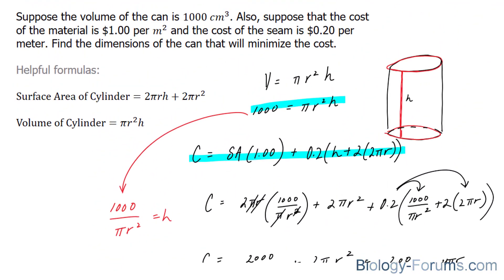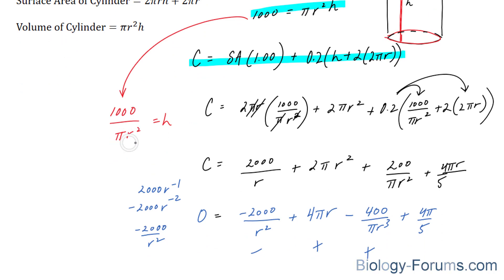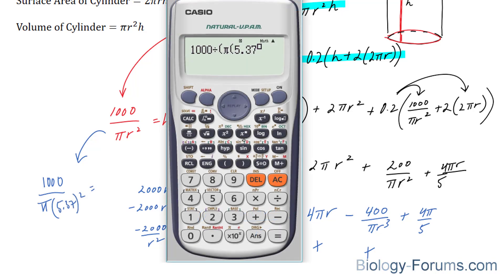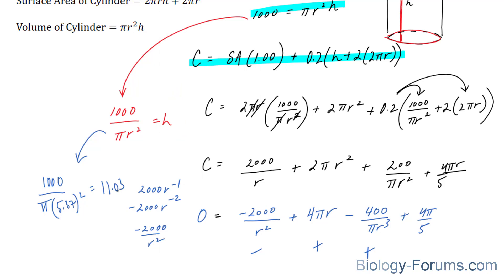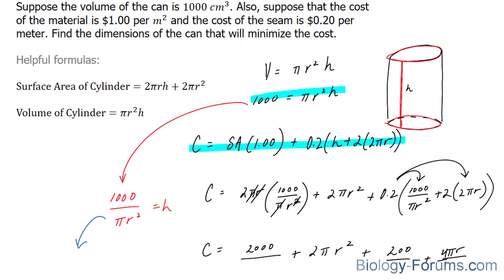So that being said, we found the radius, and we can find the height using this equation as well. And here we have one that's isolated for h already. So I'm going to plug in that number that we found, 5.37, to the power of 2 gives us 11.03. So to conclude, the height has to be 11.03 meters, and the radius has to be 5.37 meters.